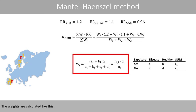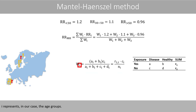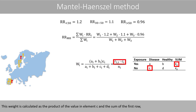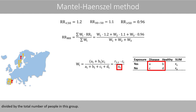The weights are calculated as follows. The index i represents, in our case, the age groups. For example, if i equals 1, we calculate the weight associated with the relative risk value for the first group, which is the youngest group. This weight is calculated as the product of the value in element C and the sum of the first row, divided by the total number of people in that group.